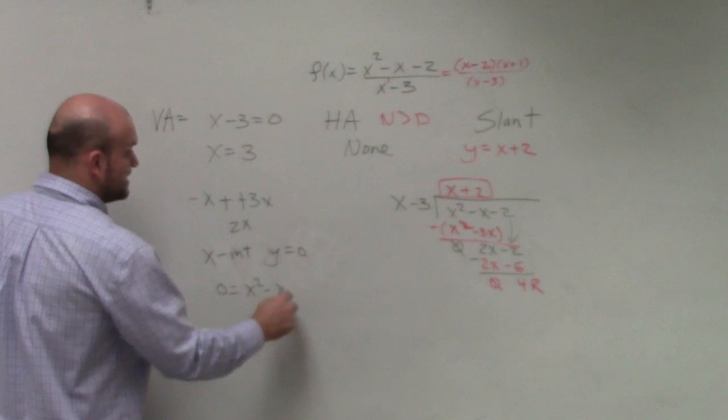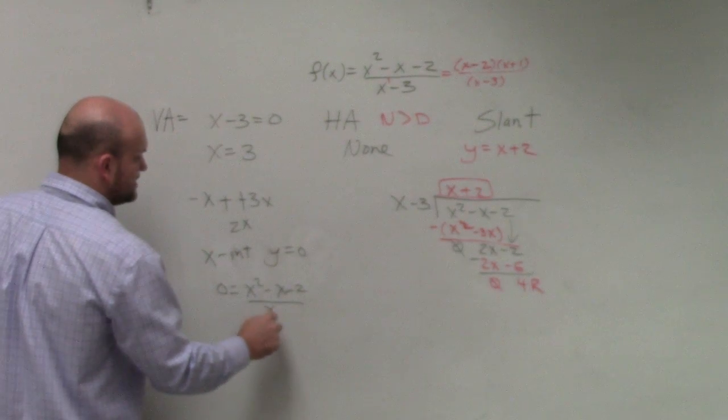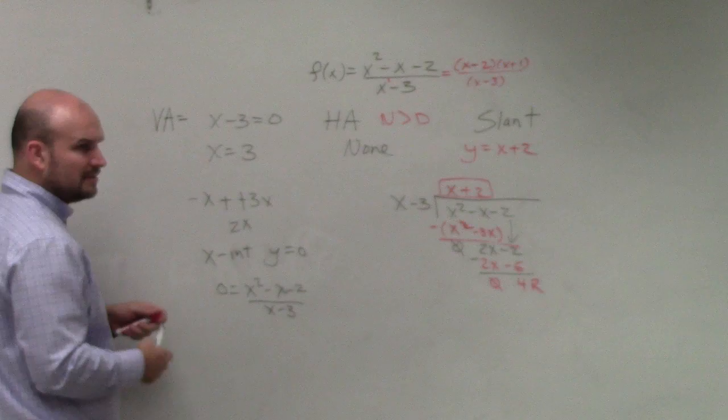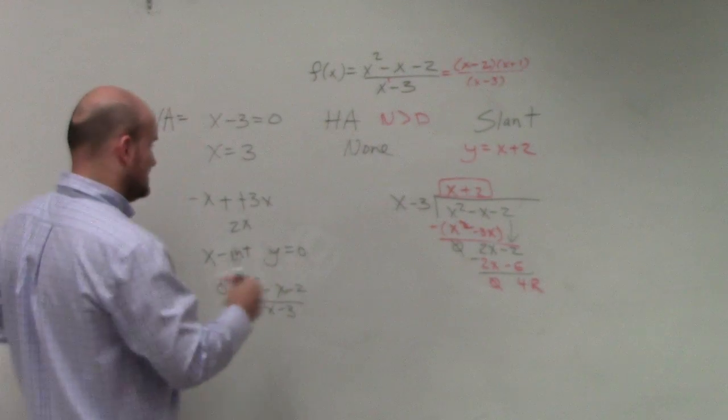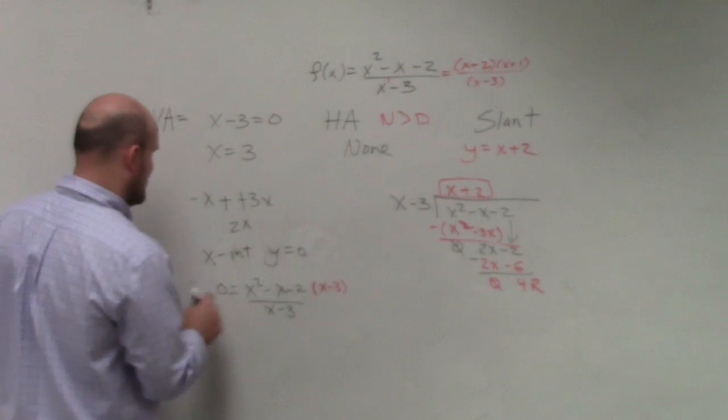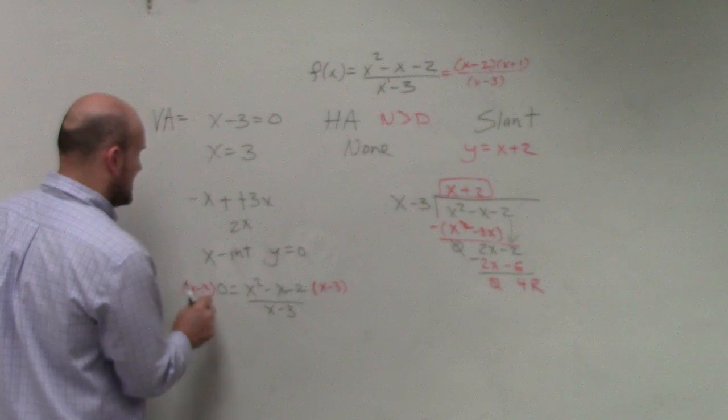So I'll say x squared minus x minus 2 equal to 0 is x minus 3. Now, we cannot solve for x when it's in the denominator. So what we're going to do is we're going to get x minus 3 off the denominator by multiplying by an x minus 3 on both sides.